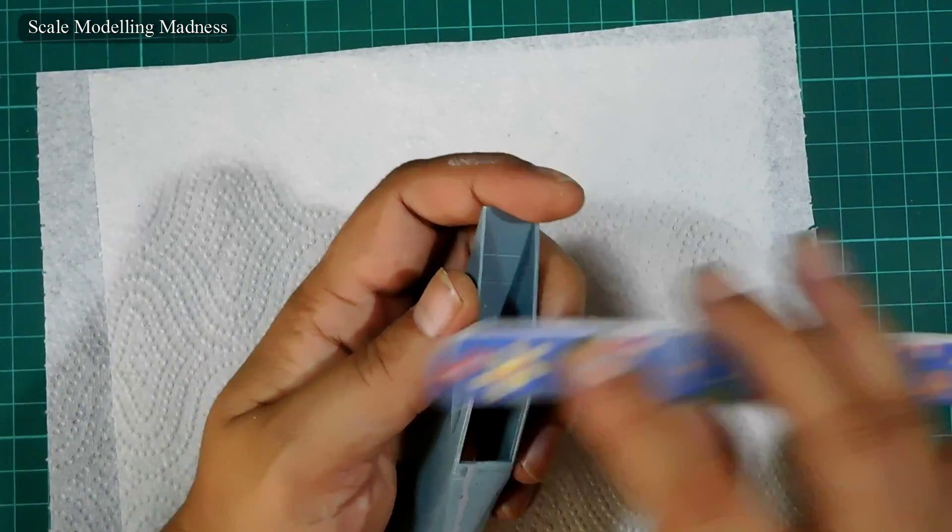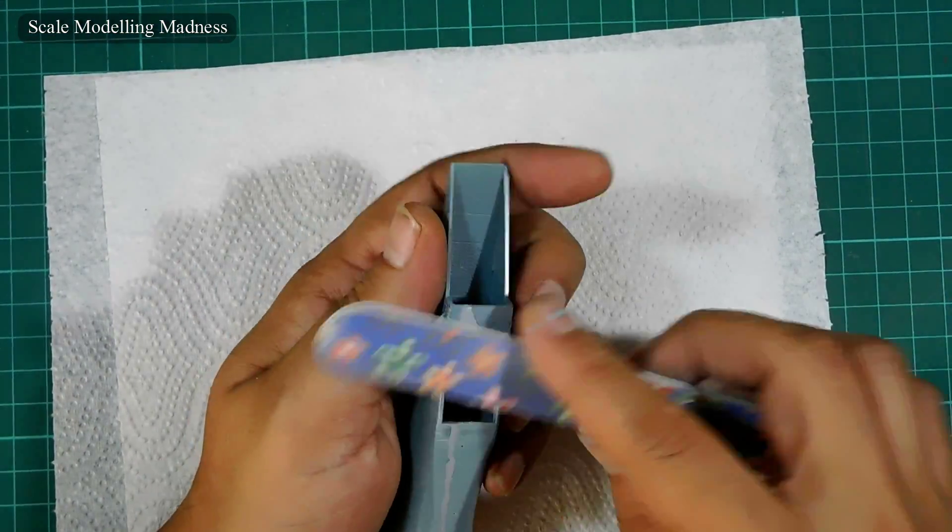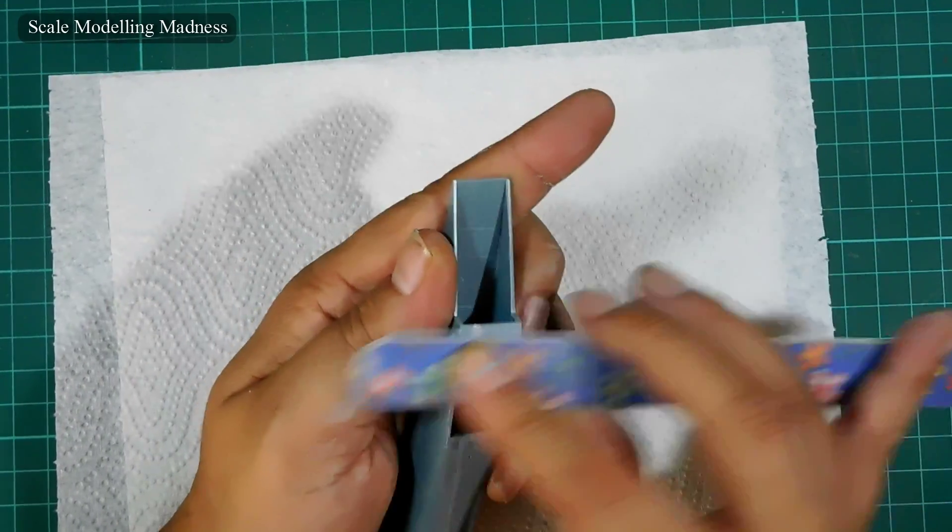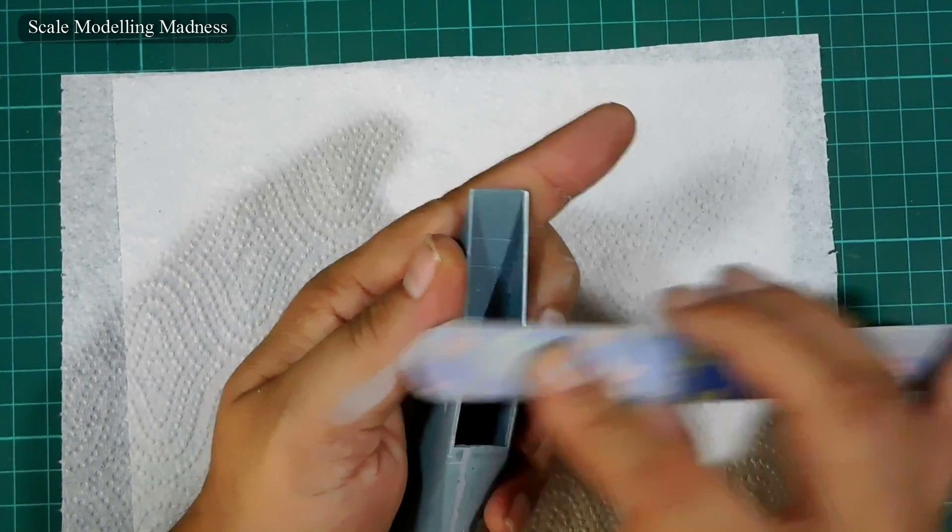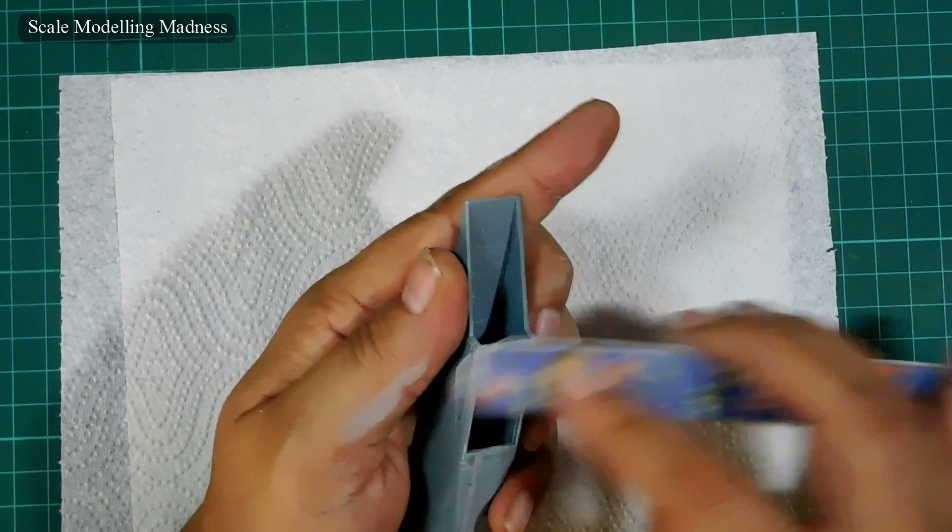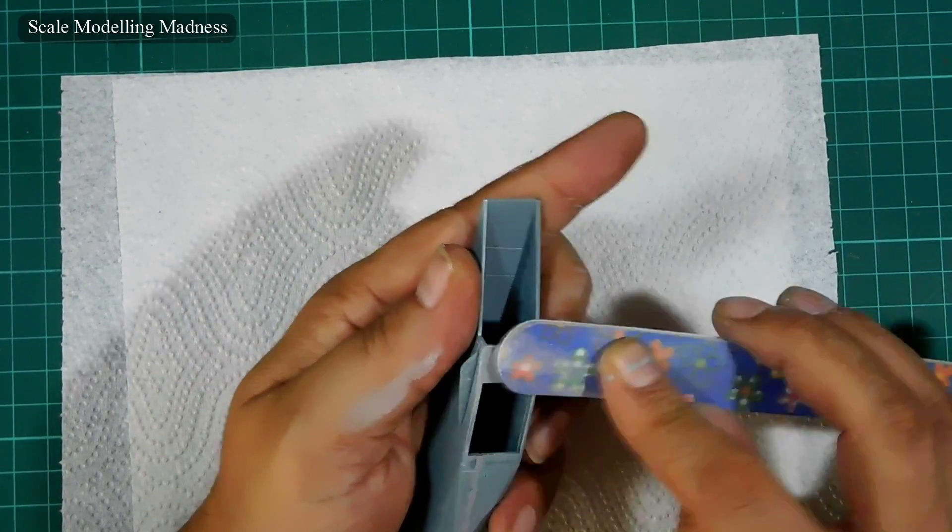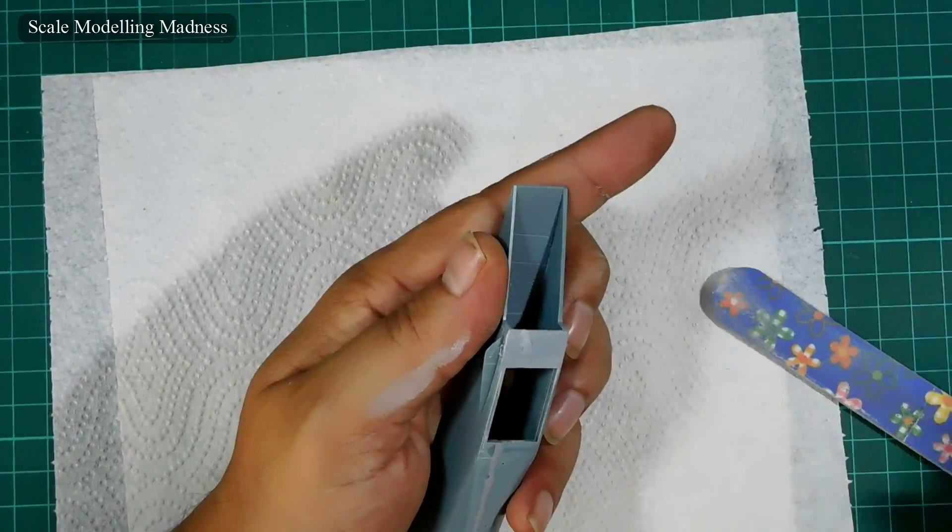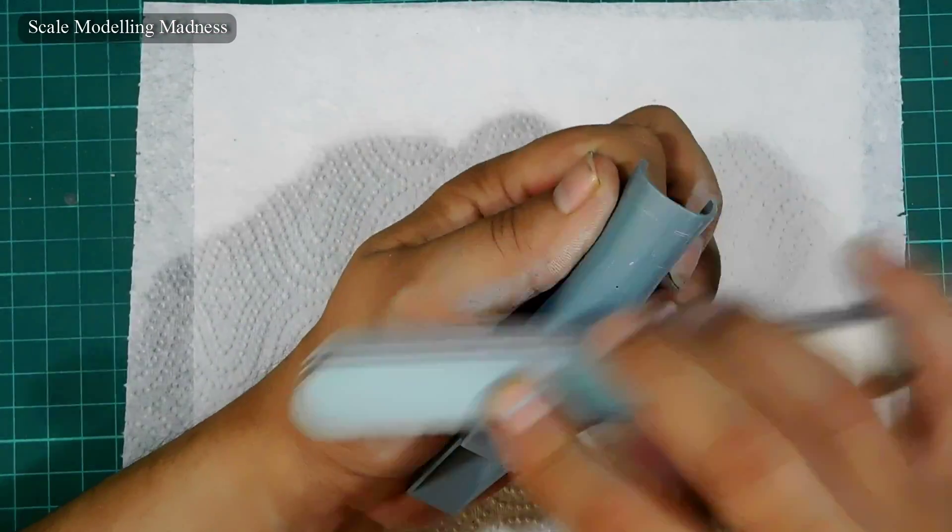The air intakes have a huge seam line running down the joint. Here, I have used a filler putty, in my case Mr. Surfacer 500, to fill the gap. Next, I will sand it down pretty much the same way as before, starting with a sanding stick and finally finishing off with a polishing stick.